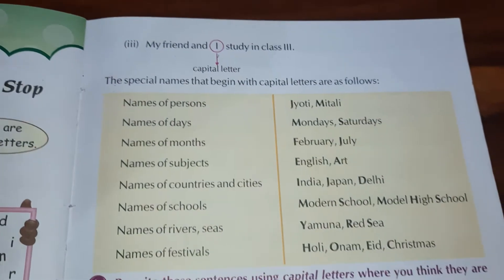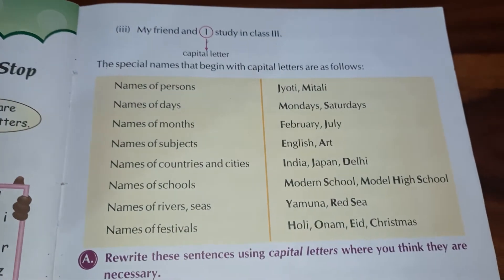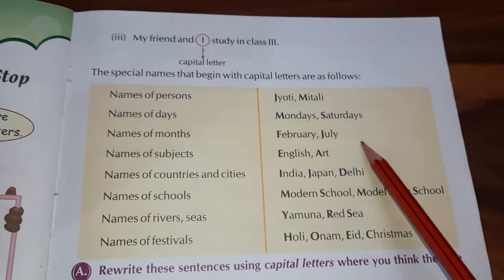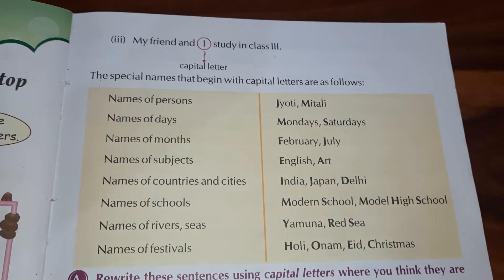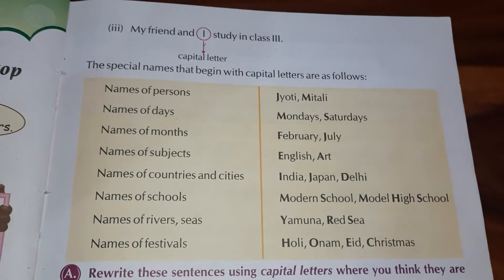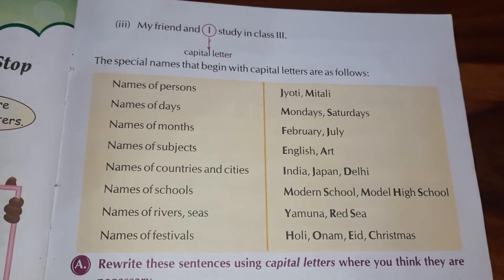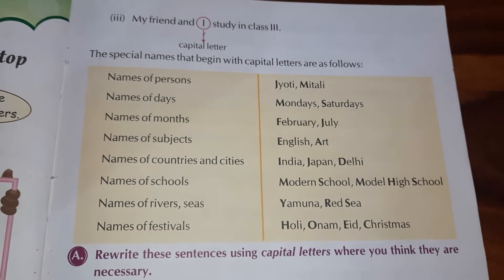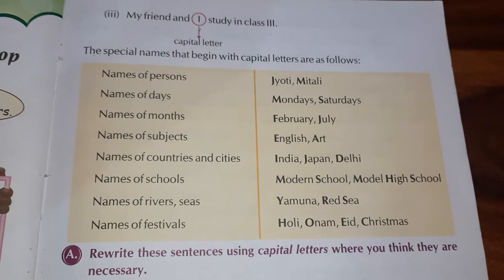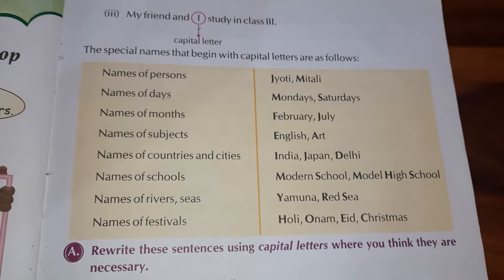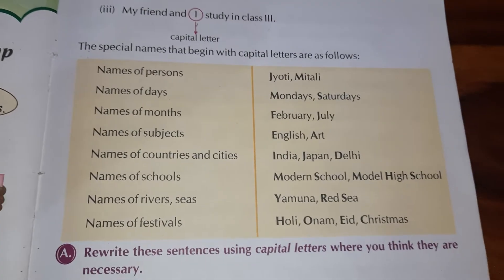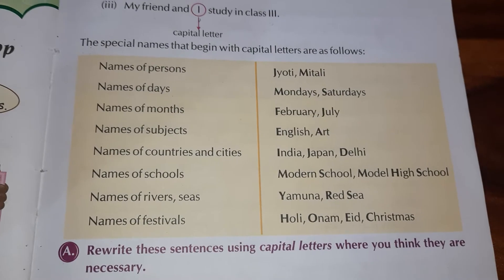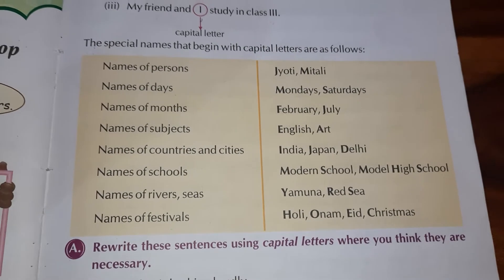Now, the special names that begin with capital letters are as follows: names of persons, names of days, months, subjects, countries, schools, rivers, and festivals are always written in capital letters.